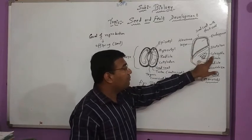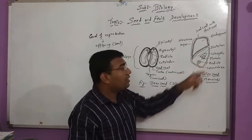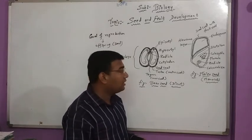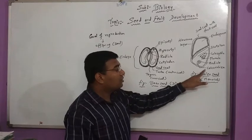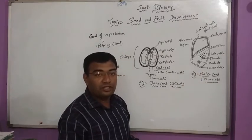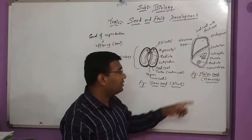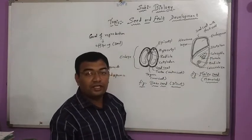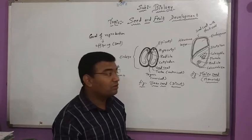And there is also a development of coleoptile and plumule. Coleoptile is responsible for protection of the shoot part, that is the plumule part, while the coleorhiza gives the protection to the growth of root part, that is radicle. And scutellum is a shield-shaped structure. This we have seen in the development of the embryo in monocot.